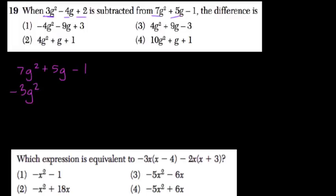and then I'm subtracting negative 4g, so I'm adding 4g, and then I'm subtracting 2, so minus 2.